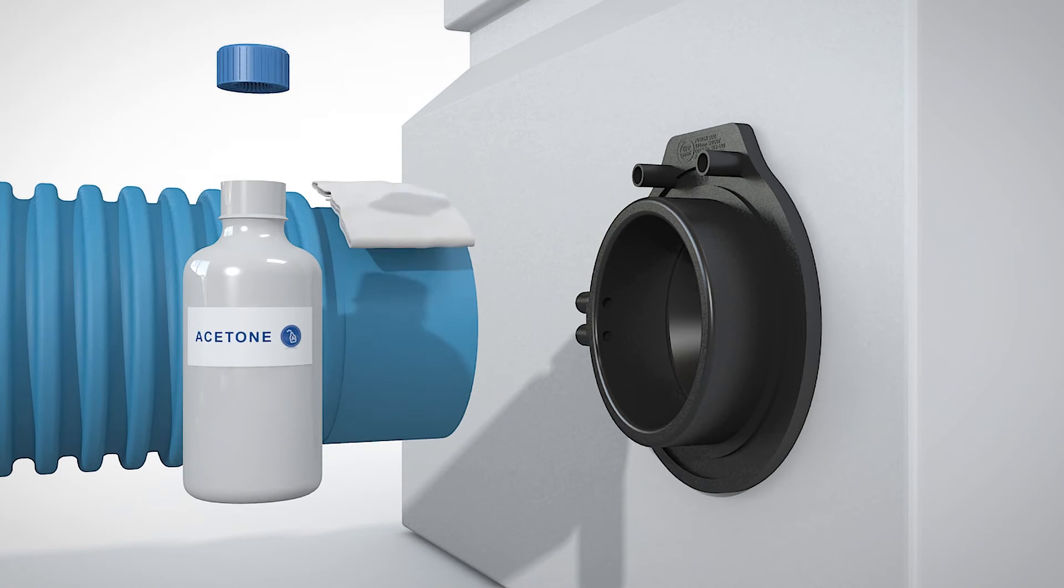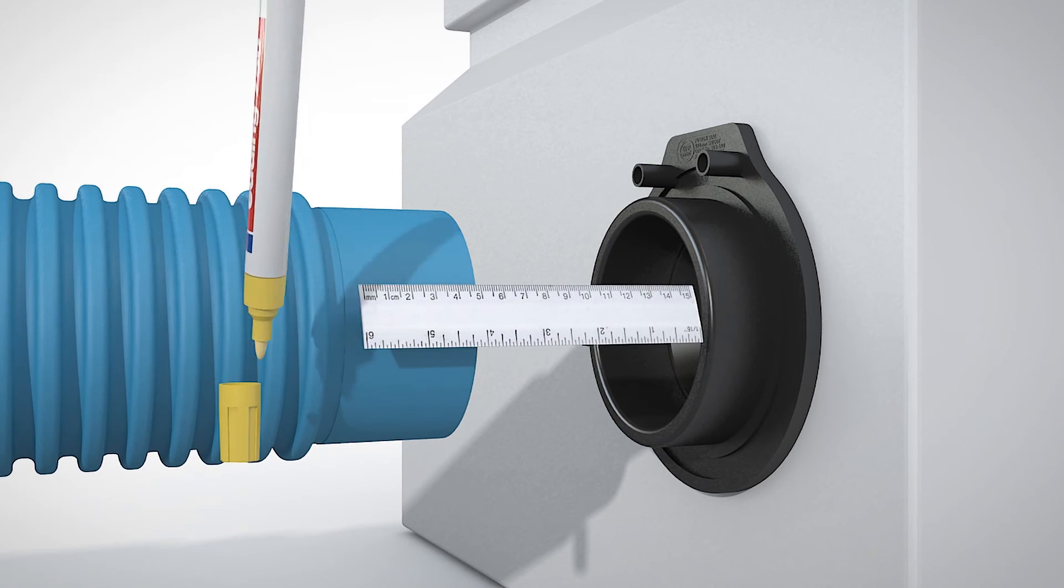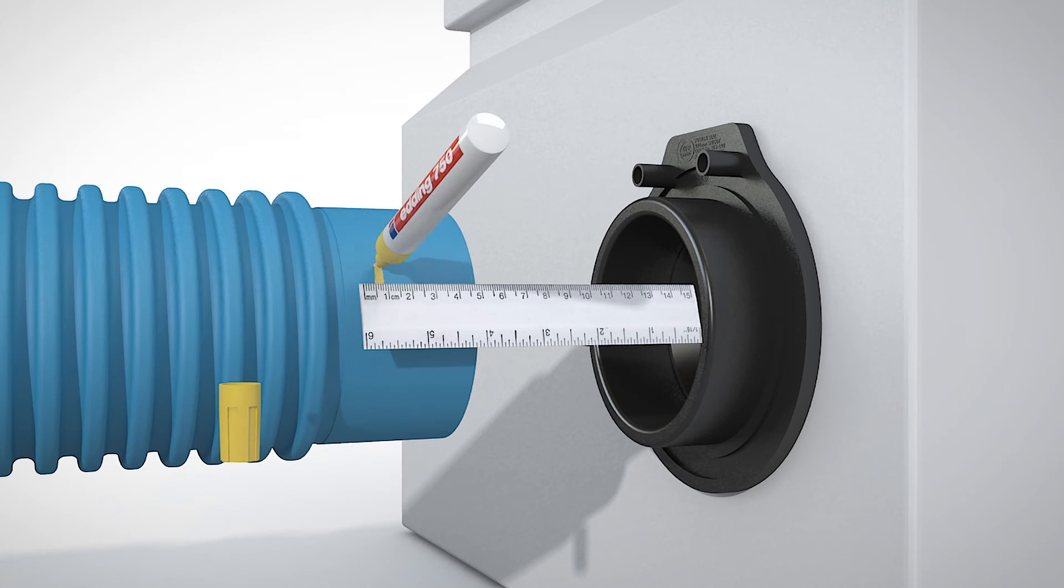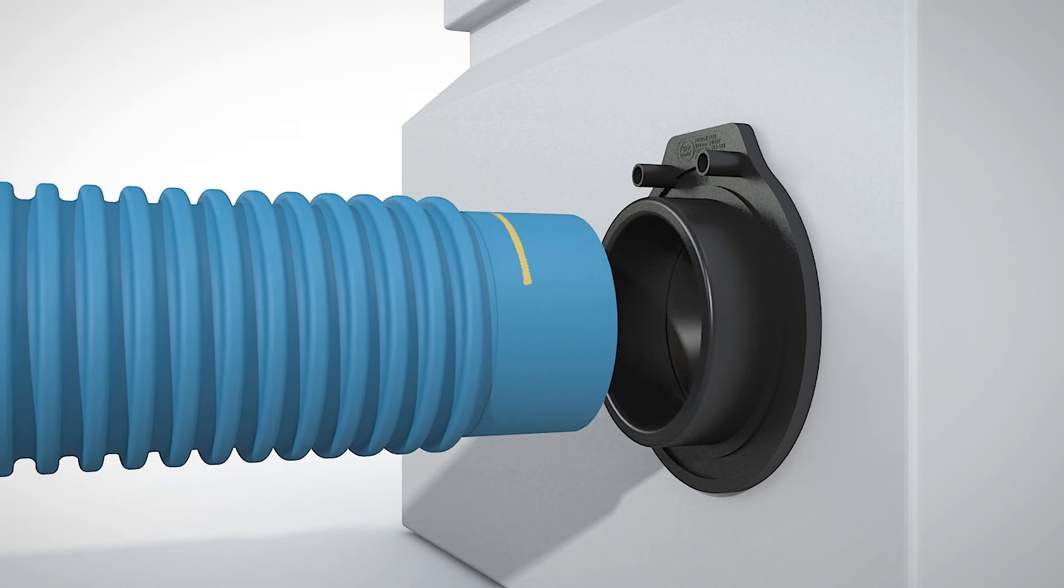The acetone cleans the area that you just scraped. Once it's been cleaned with the acetone, you'll take the section of ducting and measure the insertion depth you'll have into your entry boot.